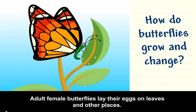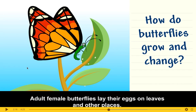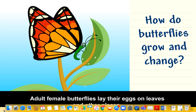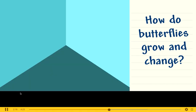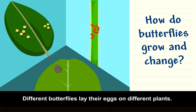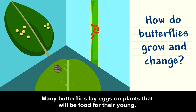Adult female butterflies lay their eggs on leaves and other places. That is the first stage — the first stage is they lay the eggs. So the first thing they do is lay the eggs. This is the little egg right here, guys. Once the female butterfly lays the eggs, this is the first step of their life cycle. Different butterflies lay their eggs on different plants. Many butterflies lay eggs on plants that will be food for their young.